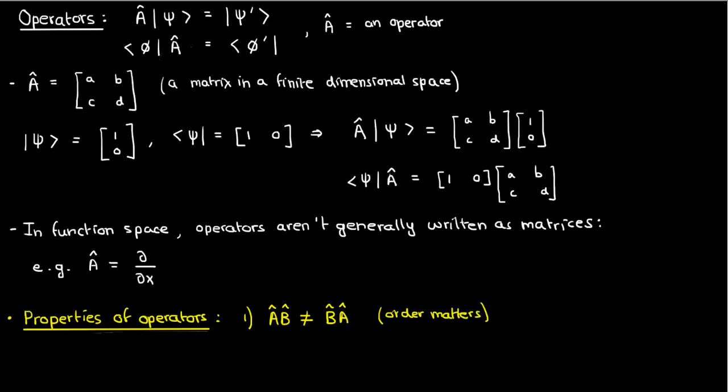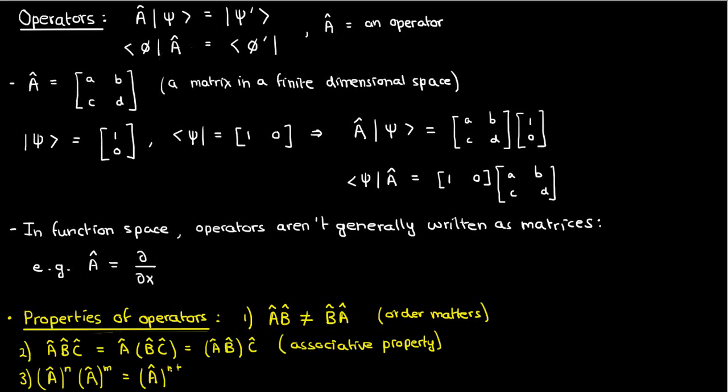The second one is the associative property. And the third one is the power property. So if I have an operator A hat operating n times and I combine it with the operator A hat operating m times, that's the exact same as operating A hat n plus m times. You can compare this to raising matrices to powers as well, and you'll see that it's consistent.